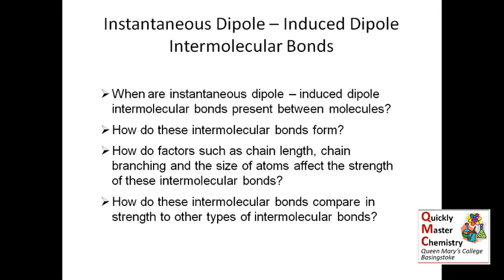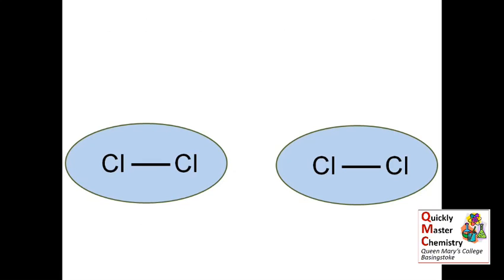Let's look then at how they form. To do that, we'll consider this pair of chlorine molecules, Cl2. The important point to grasp here is that within a molecule, you get some random movement of electrons.